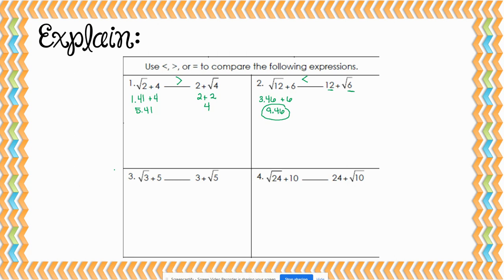For the square root of 3 plus 5, we find the approximate decimal of the square root of 3, which is about 1.73. So 1.73 plus 5 gives us 6.73. Now for 3 plus the square root of 5, the square root of 5 is about 2.24. When we add 3 plus 2.24, we get 5.24. So 6.73 is greater, meaning the square root of 3 plus 5 is greater than 3 plus the square root of 5.